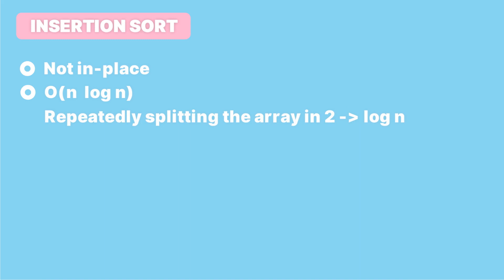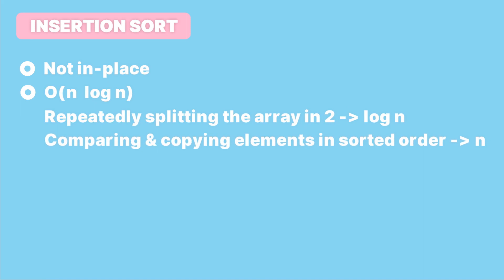Now let's discuss how this algorithm performs. It is not in-place — the splitting phase is done in place, but during merging a temporary array is created for each pair. The time complexity is O(n log n): the log n comes from repeatedly splitting the array in half during the splitting phase, and n comes from comparing and copying elements during the merging phase. Finally, it's a stable algorithm because when merging, equal elements from the left partition are always copied before those from the right, preserving the relative ordering of duplicate items.